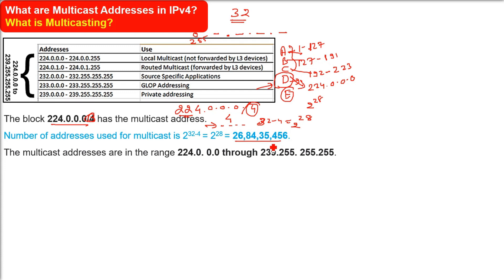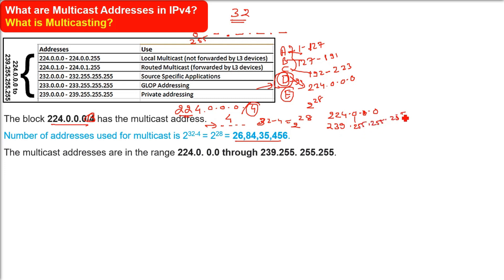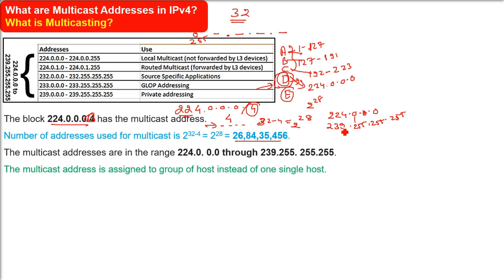The multicast address range is from 224.0.0.0 all the way to 239.255.255.255, because from 240 to 255 in the first octet is Class E, reserved for experimental purposes. Addresses at 224.0.0.0 and above are multicast addresses. Now understand — you want to give an invitation to some people.